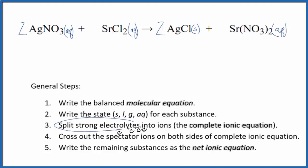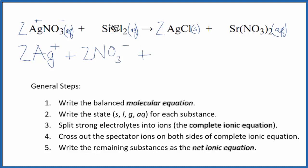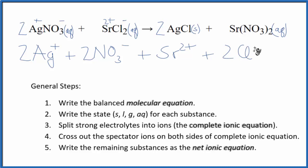Now we can split the strong electrolytes into the ions, which will give us a complete ionic equation. Silver is always one plus, and this entire nitrate ion is always one minus. So I have two silver ions — I won't write aqueous each time, let's do that at the end — plus two nitrate ions. Strontium is in group two; it has a two plus ionic charge when it forms ions. And then chloride, Cl minus. So I have Sr two plus, and then I have two of these chloride ions, two Cl minus.